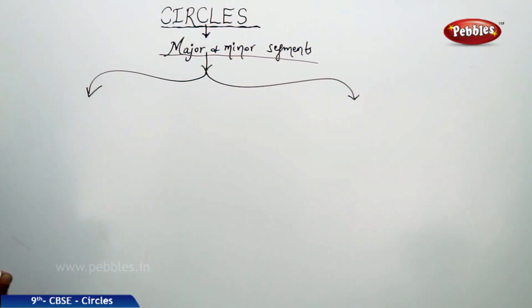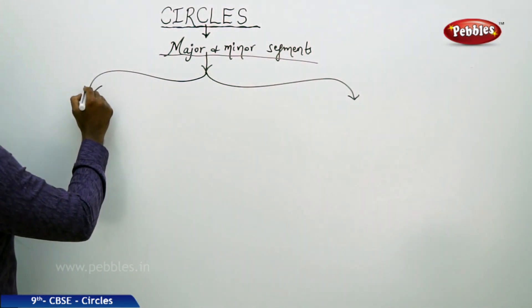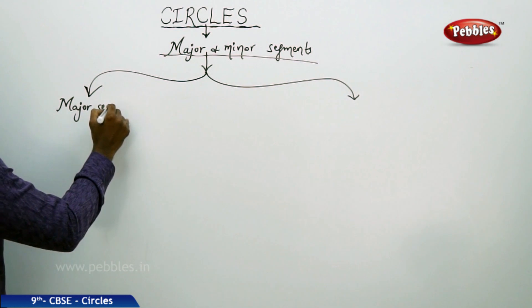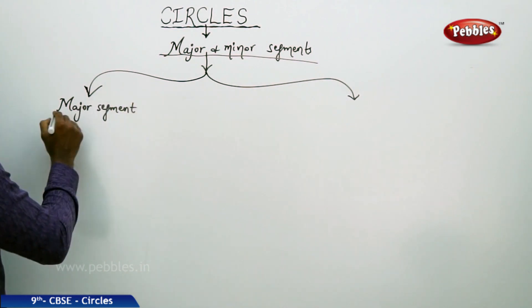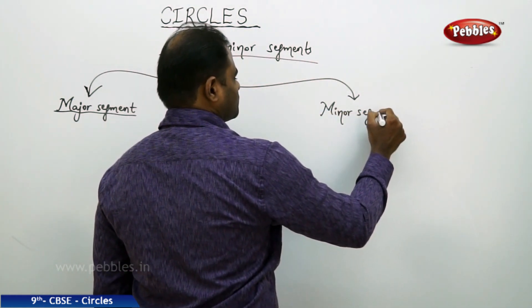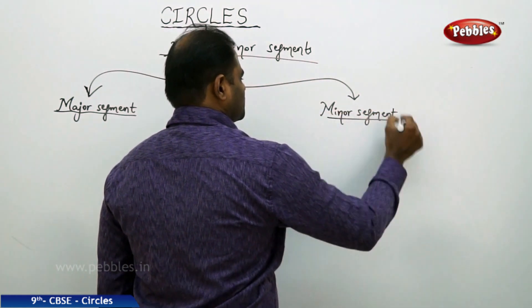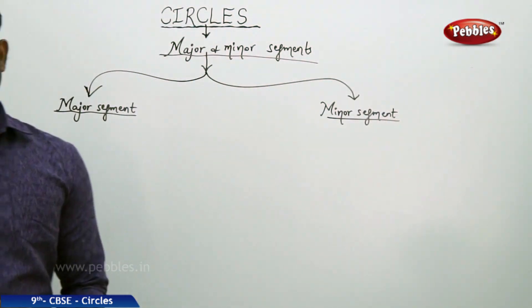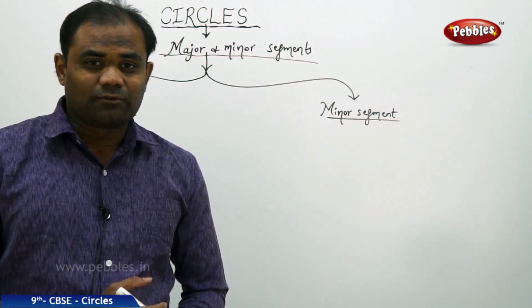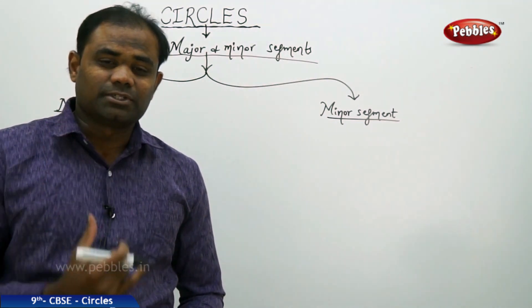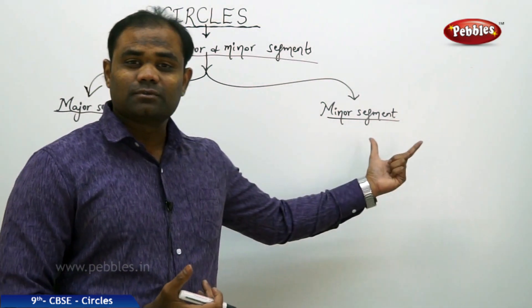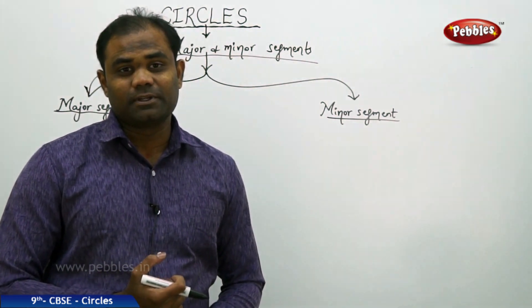Let's classify the given circle into two different cases: major segment and minor segment. As we know, a segment is a region obtained when a chord intercepts the circle. Therefore, every circle makes two regions with a chord. Let's see which region is called the major segment and which is called the minor segment, with their specific definitions.